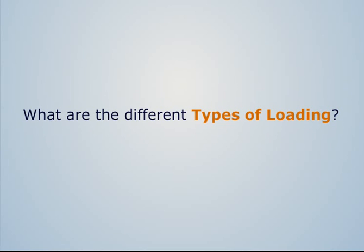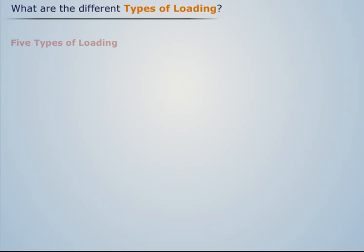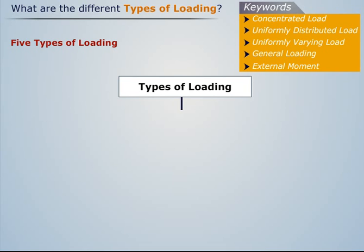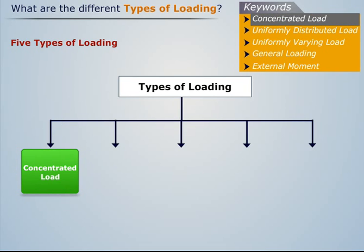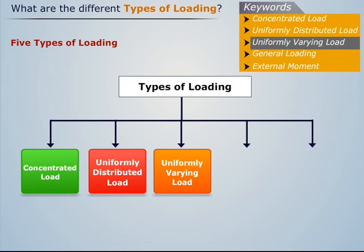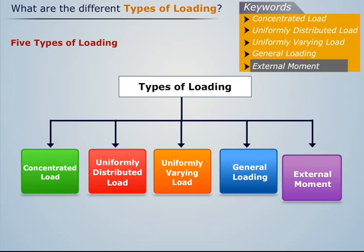What are the different types of loading? There are five types of loading: concentrated load, uniformly distributed load, uniformly varying load, general loading, and external moment.